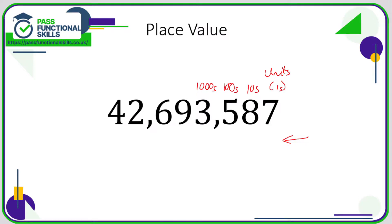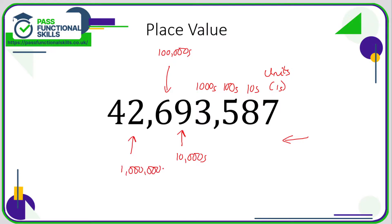As we move to the left, each column is 10 times greater than the column before. So 1 times 10 is 10, times 10 is 100, times 10 is 1,000. So this column here is going to be the 10,000s column, this one the 100,000s column, this one our millions column, and this one — this number's stupidly big, really — this is our 10,000,000s column.